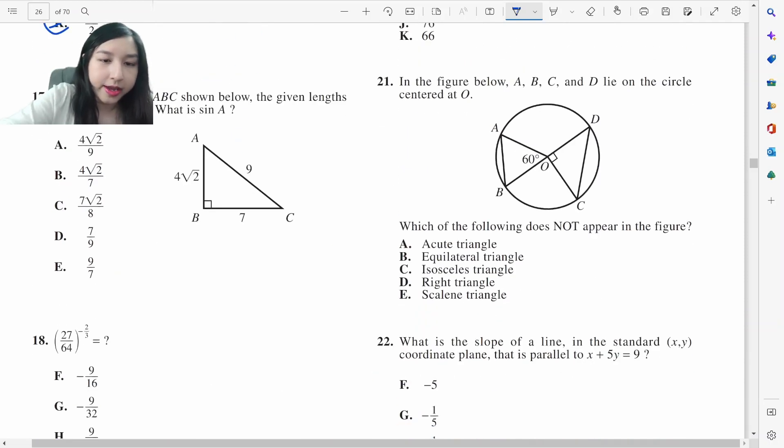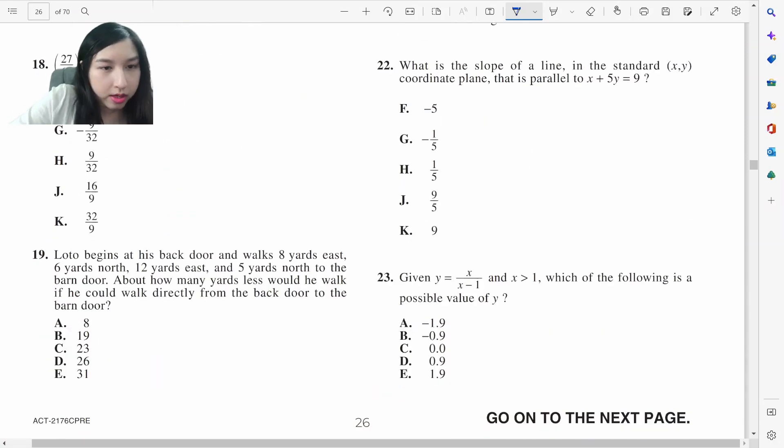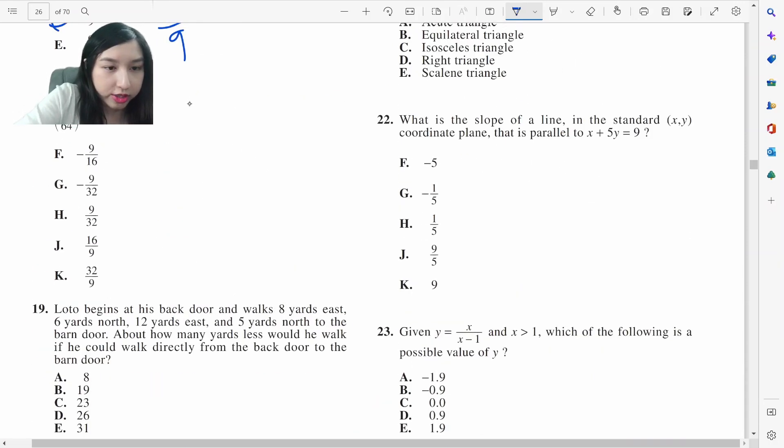Flip the fraction and cube root. If you cube root, it's going to be 4 over 3. And then we have to square it. 16 over 9.